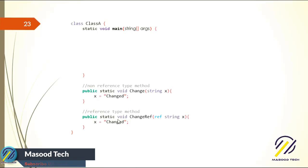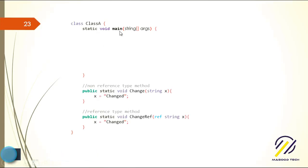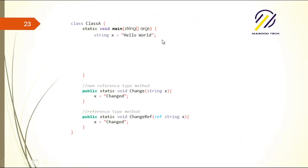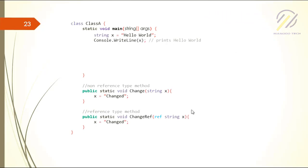I'm marking the function as static just so I can call it from the main function — static doesn't play any role in the concept here. In the demo, X equals 'hello world'. I print it and it prints 'hello world'. Then I pass X to the change function.